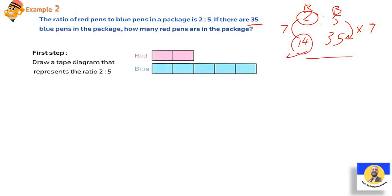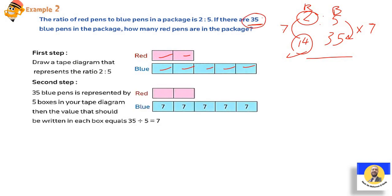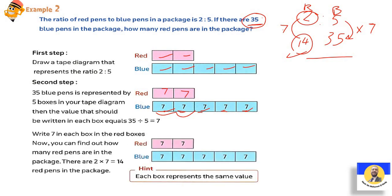But if we want to solve it by tape diagram: First, we draw tape diagram, 2 red and 5 blue. They must all be equal. After we make them equal, we say the blue is 35. So 35 divided by 5, each one will be 7, 7, 7, 7, 7. Since the boxes are the same, here it will also be 7 and 7. So the red will be 7 and 7, that's 2 by 7 equals 14. So we can do it by tape diagram method or by the normal method, as long as it doesn't say use tape diagram.